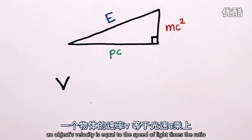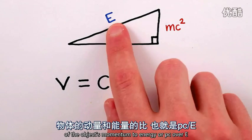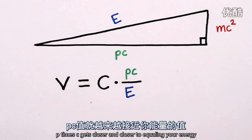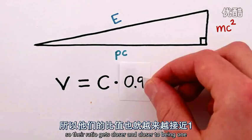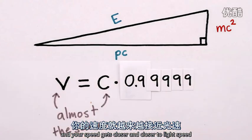Anyway, as an example, an object's velocity is equal to the speed of light times the ratio of the object's momentum to energy, or pc over E. If your momentum increases, pc gets closer and closer to equaling your energy, so their ratio gets closer and closer to being one, and your speed gets closer and closer to light speed.